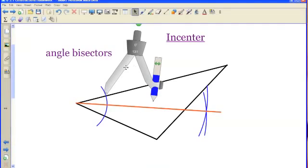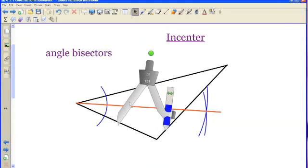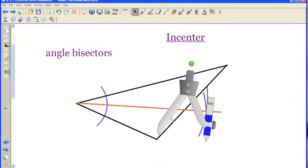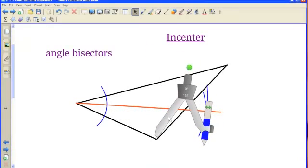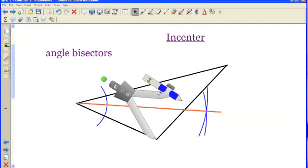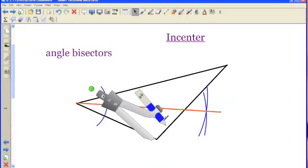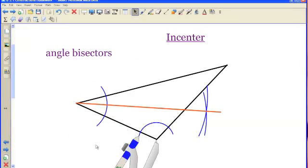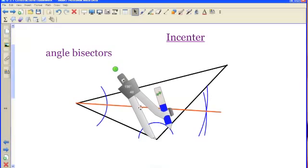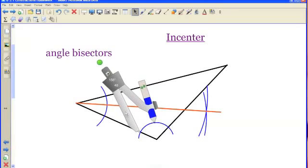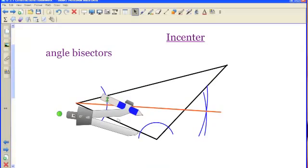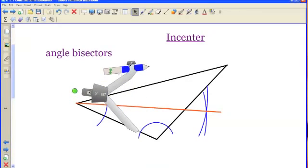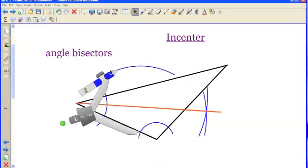I need two more. It shouldn't take very long to do these last two. Now that we know how to do it, let's see how quickly we can move through this. The needle goes on the vertex. Open it to just some reasonable distance. Make sure that it intersects both of the sides. Move to one of those intersections. Open my compass so that it goes outside the triangle. Strike an arc.